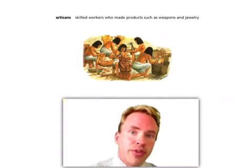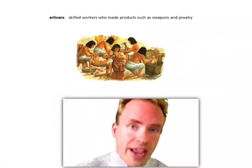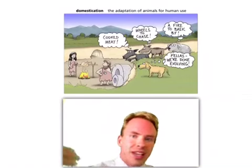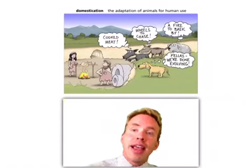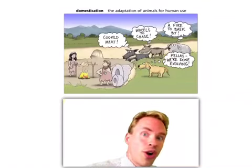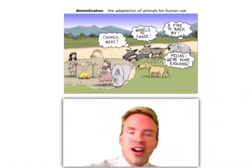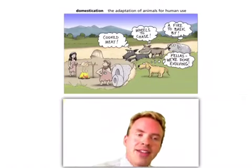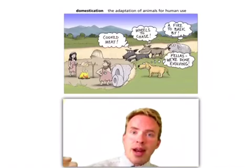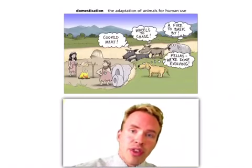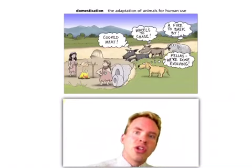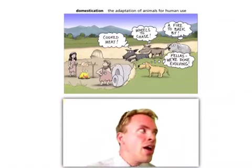Another big change in the Neolithic Revolution is the beginning of the domestication of animals. Dogs are the first animal that we end up domesticating. You domesticate dogs, sheep, and cows — we start adapting animals for human use. That ends up being a key thing because you start eating the animals and don't have to hunt them anymore. Domesticating animals also really helps with farming because you can use the animals to help pull things, freeing up human muscle to do other things and enabling you to farm more.